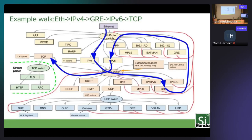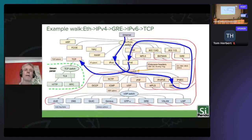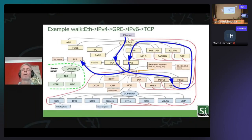If we look at one example of a parse walk — Ethernet with IPv4, GRE, IPv6, and TCP — following the blue lines you'll see that for this particular packet there is a unique path through the parse graph. The nodes that are touched — IPv4, GRE, and so on — are the nodes visited because those are the protocol headers in the packet. And protocol headers are always stacked, so we have to process Ethernet, then IPv4, then GRE in that order to properly parse the packet.